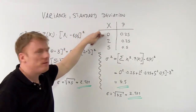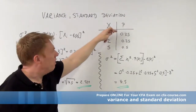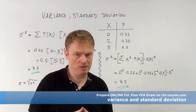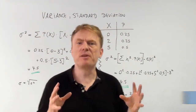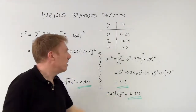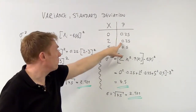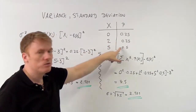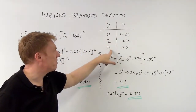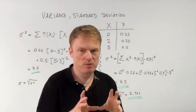The random variable takes the values 0, 2, and 5 with the given probabilities of 0.25, 0.25, and 0.5. The expected value, as we computed in a different video, was 3. As you can see: 0 times its probability, plus 2 times 0.25 is 0.5, plus 2.5 — each value times its probability — equals the expected value, which is 3.